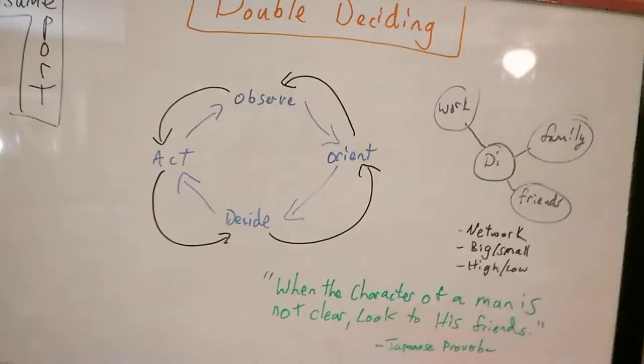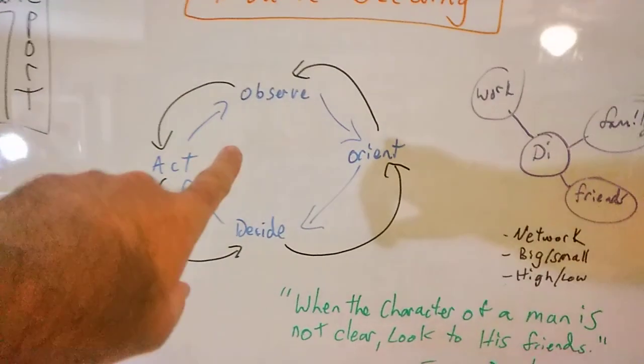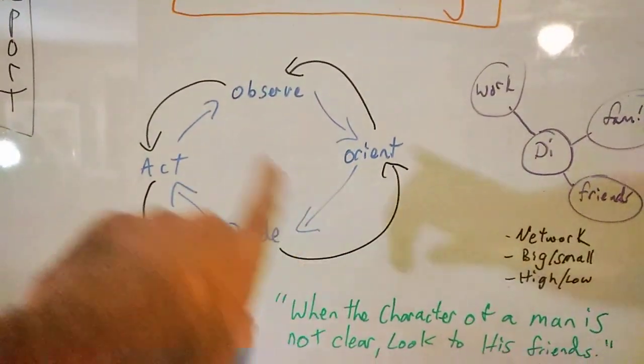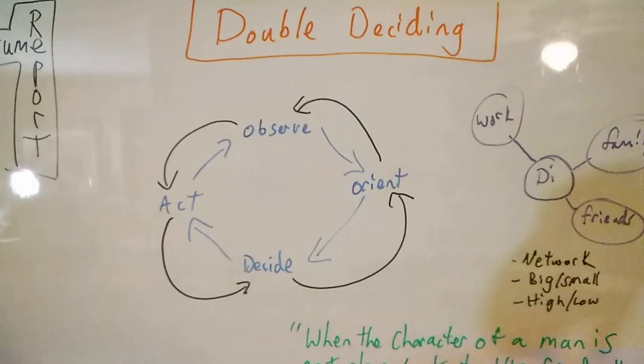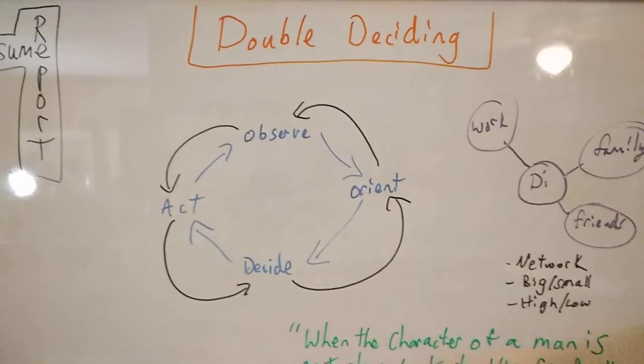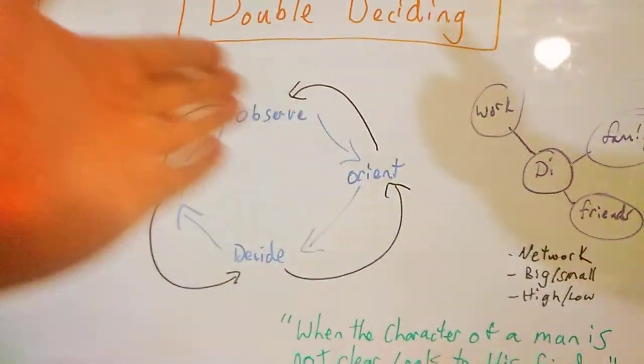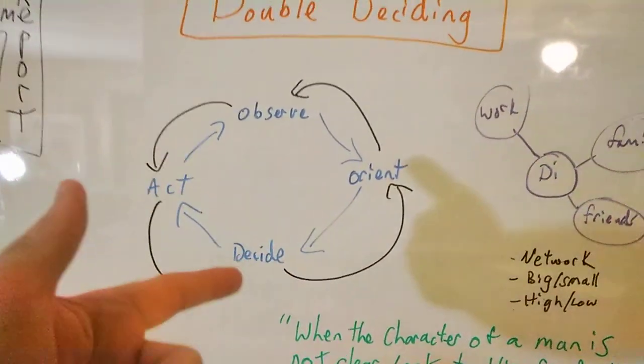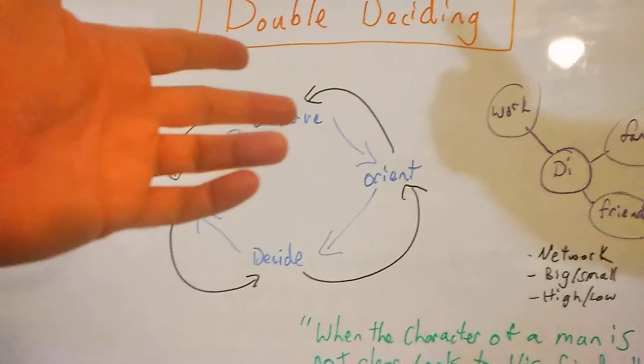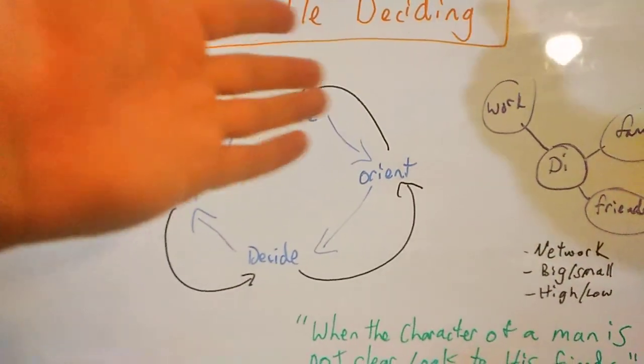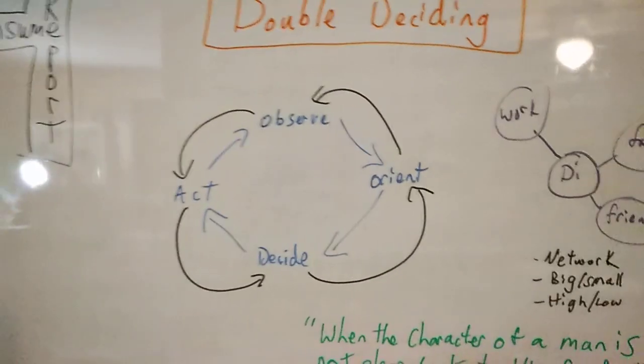I think I'm going to start over here. So we have the OODA loop here, right? Observe, orient, decide, act. This is a decision-making model. You observe something, you orient to it based on whatever, you make a decision, and then you act. And then you observe the effects of the action, and then you're in this loop.